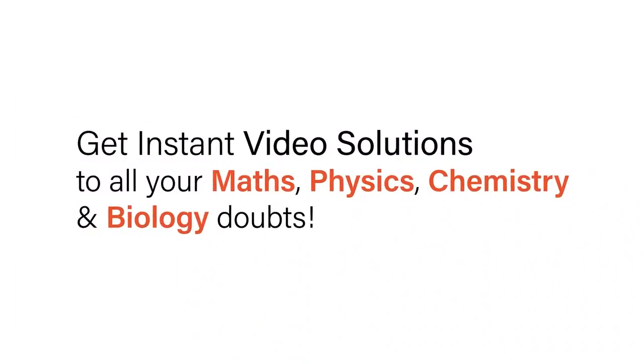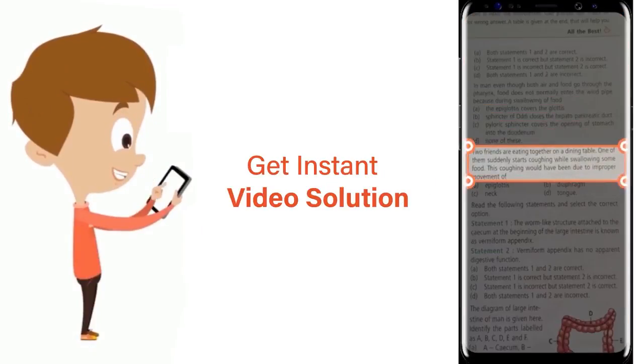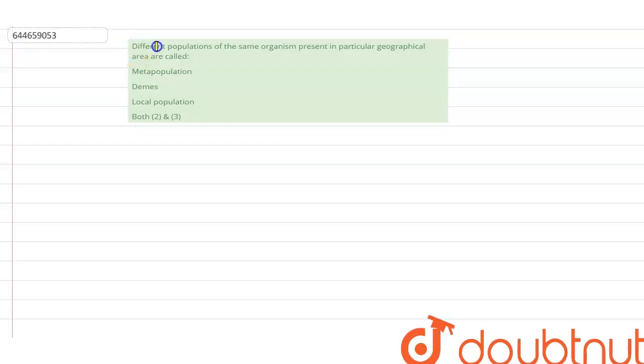With Doubtnet, get instant video solutions to all your math, physics, chemistry, and biology doubts. Just click the image of the question, crop the question, and get an instant video solution. Download the Doubtnet app today. The question here says: different populations of the same organism present in a particular geographical area is called which of the following?